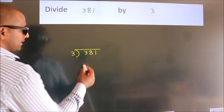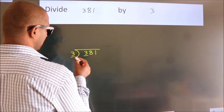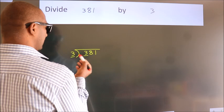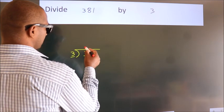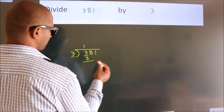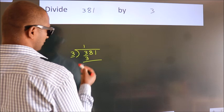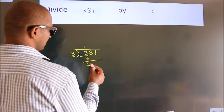Next, here we have 3. Here 3. When do we get 3? In the 3 table. 3 times 1 is 3. Now we should subtract. We get 0.